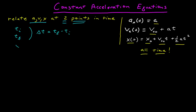I'm going to go slowly so we keep the notation very clear. I'm going to identify the initial position. The initial position is the position function evaluated at the initial time. The final position, x subscript f, is defined to be the position function evaluated at the final time.